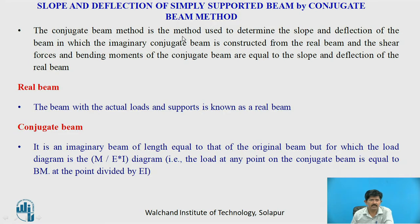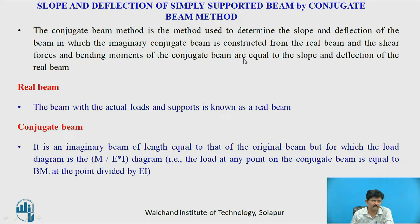The conjugate beam method is the method used to determine the slope and deflection of a beam, in which an imaginary conjugate beam is constructed from the real beam. The shear forces and bending moment of the conjugate beam will be equal to the slope and deflection conditions of the real beam.